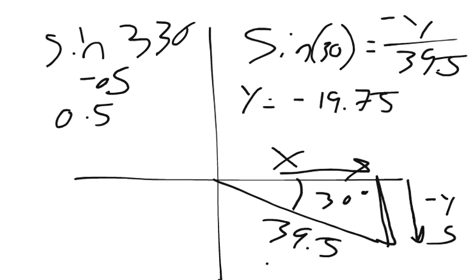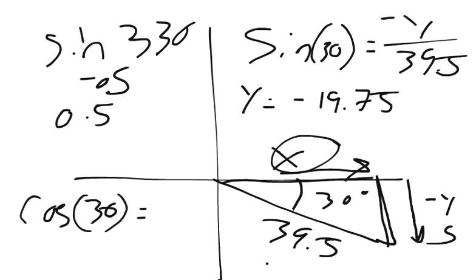Then we can do cosine to find our x units. Cosine equals adjacent over hypotenuse. So, cosine of 30 equals x over 39.5.